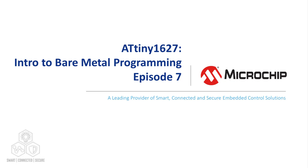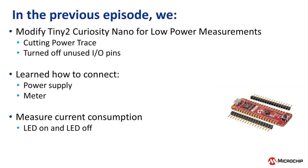Hi everyone, Ross Satchell from Microchip back again. Welcome to Episode 7 in our Tiny2 Bare Metal series. In the previous video, Episode 6, we modified our Tiny2 Curiosity Nano so that we could measure the current consumption of the Tiny2 by effectively disconnecting the programmer debugger. We did this by cutting the power trace and soldering in header pins.